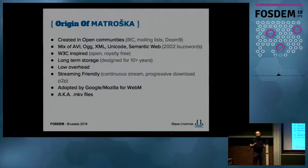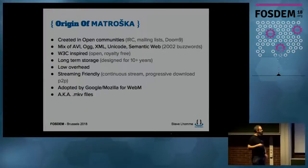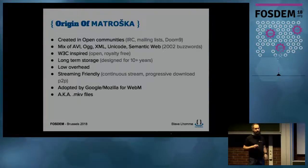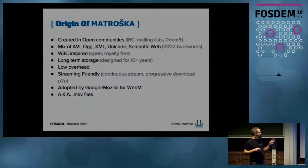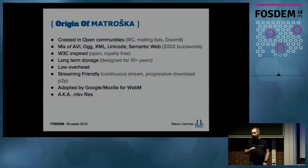Matroska was created as an open format from the beginning. It was developed mostly on the web with people who mostly never met each other — on IRC, mailing lists, or the Doom9 forum. It mixes lots of technologies that were emerging when it was created. The idea was to replace AVI. It drew on XML, Unicode, and semantic web concepts, mixing all of this together. Everything was open and royalty-free.